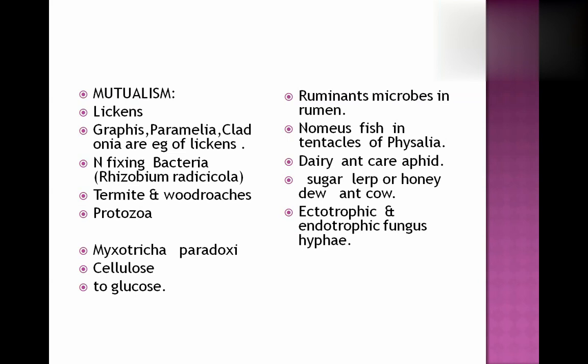Now comes mutualism. When Species A and Species B live together and both are beneficial to each other — they get benefit from each other. Example: lichens — algae and fungus live together. Algae synthesize food which is taken by fungus, and in turn algae receives nutrition and humidity from the fungus. Examples are Graphis, Parmelia, Cladonia — these are all examples of lichens.